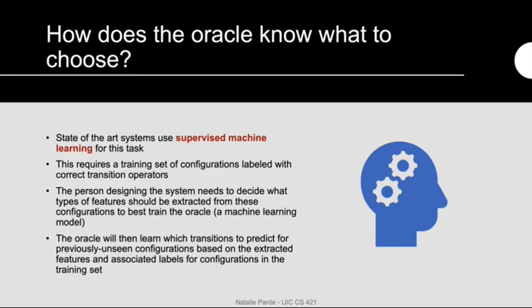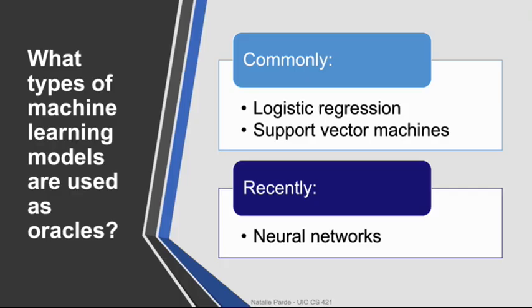In terms of its decision-making process, the oracle generally chooses what to do next using supervised machine learning. Given a training set with different states or configurations labeled with the correct transition operators, it will extract features specified by the system designer and learn which decisions to make in different circumstances to produce ideal outcomes. A variety of machine learning models might be used as oracles. In the past, common models included logistic regression and support vector machines. Recently, neural networks have also been used for this task with success.